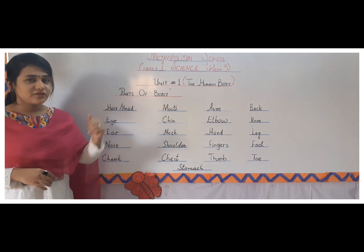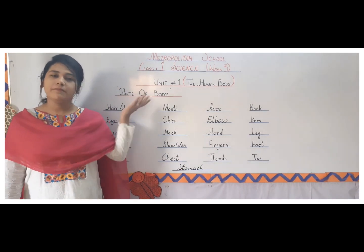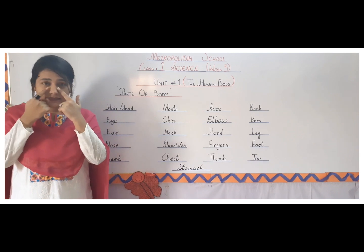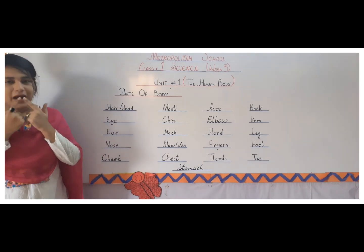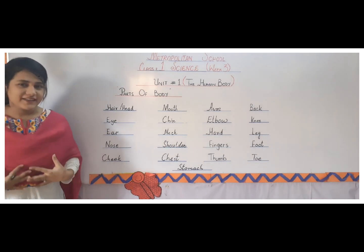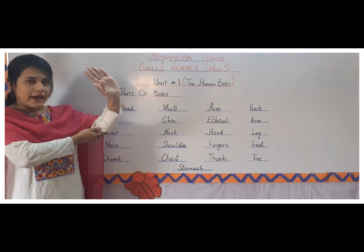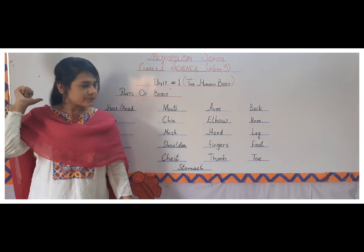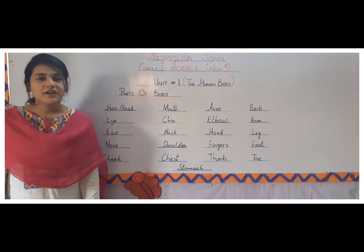Let's begin with parts of body. Parts of body are those things which are part of our body. So let's begin: head, hair, eyes, ear, nose, cheek, mouth, chin, neck, shoulder, chest, stomach, arm, elbow, hand, fingers, thumb, back, knee, leg, foot and toe.